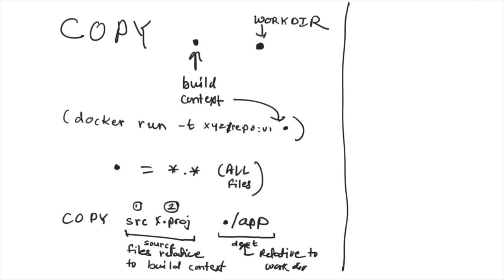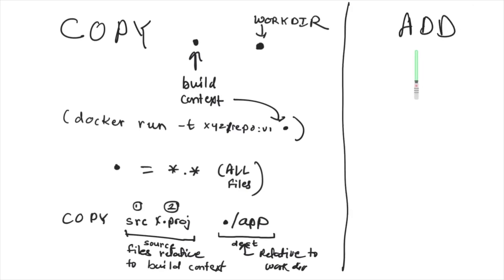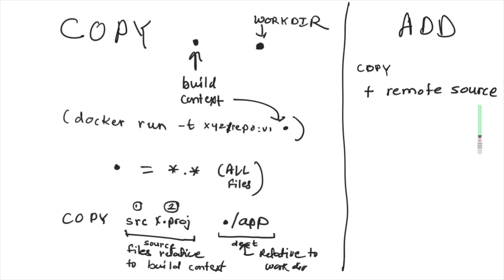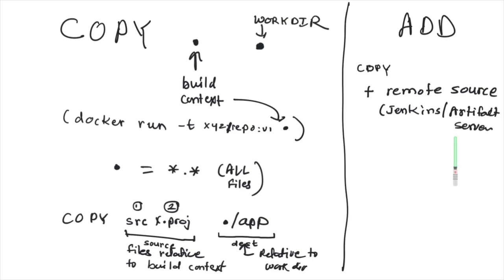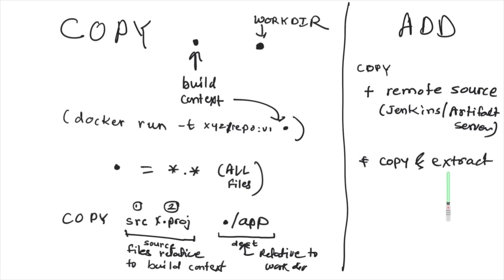ADD is another instruction similar to COPY, but it does two additional things. First, ADD can support a remote source — for example, copying an artifact from a Jenkins build or an artifact server into the container. Second, ADD will not only copy but also extract archive files at the destination. If you have archives like .tar.gz or .zip, they get copied and extracted automatically. That is the difference between COPY and ADD.